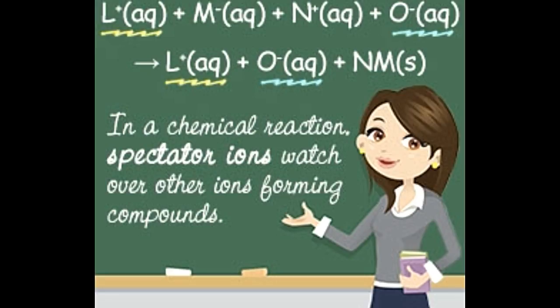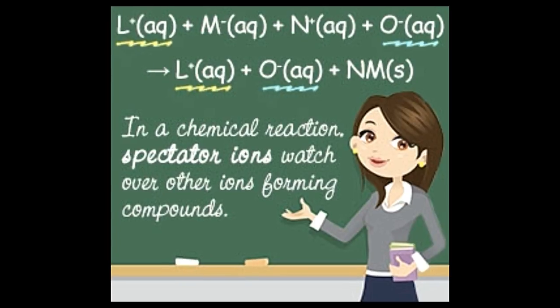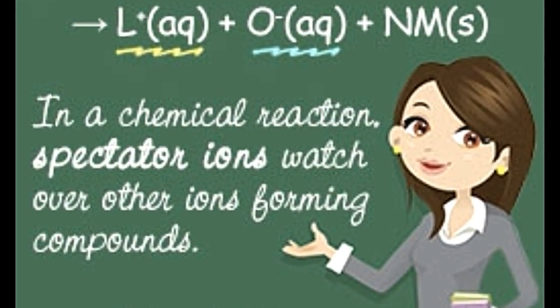How to identify and list the spectator ions in a reaction? Step 1: Write the equation with chemical formulas for which spectator ions are to be determined. Step 2: Express each of the reactants and products in terms of its cations and anions. Step 3: Write down those cations and anions whose charge doesn't change throughout the equation. Step 4: Write down those cations and anions whose state (aqueous) remains the same throughout the equation. The ions which satisfy both criteria in Steps 3 and 4 are said to be spectator ions.